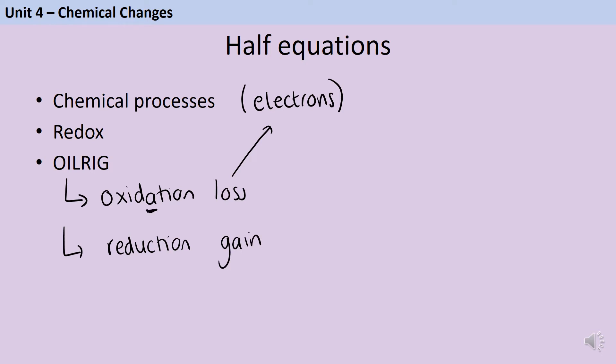Oxidation, with an A, happens at the anode, whereas reduction, with a C, happens at the cathode.